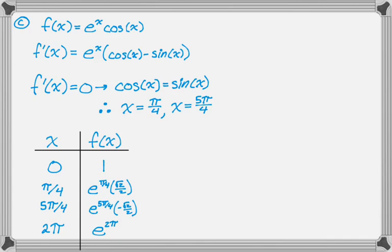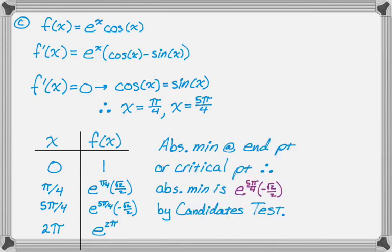All right, so since we're looking for the minimum, we know that it's the negative. So I'm going to say that the absolute minimum occurs at an endpoint or a critical point. Therefore, the absolute minimum is e to the 5 pi over 4 times negative root 2 over 2, and I use the candidates test.